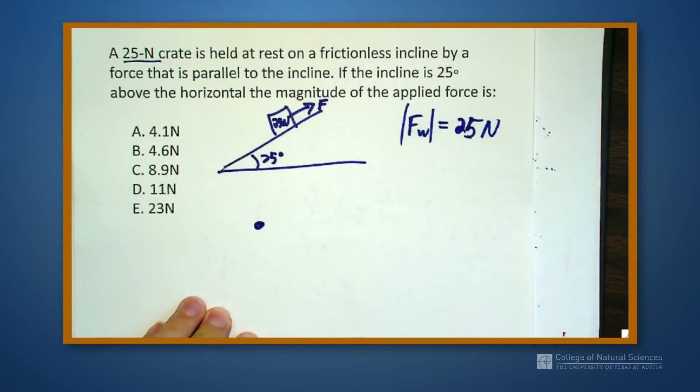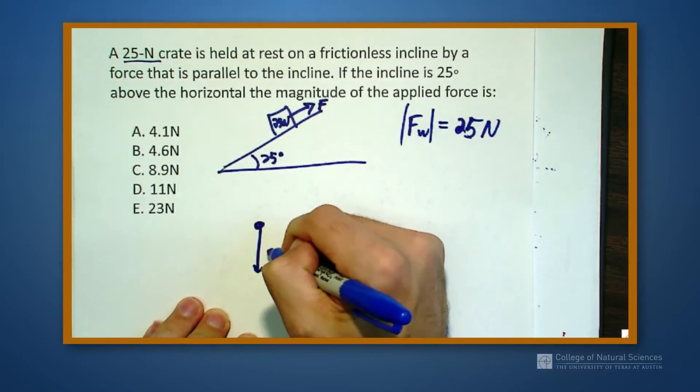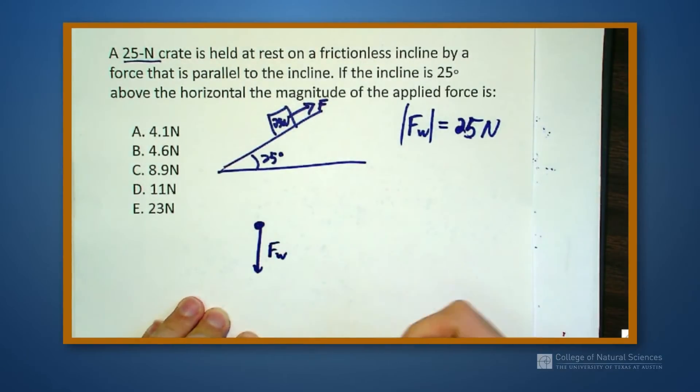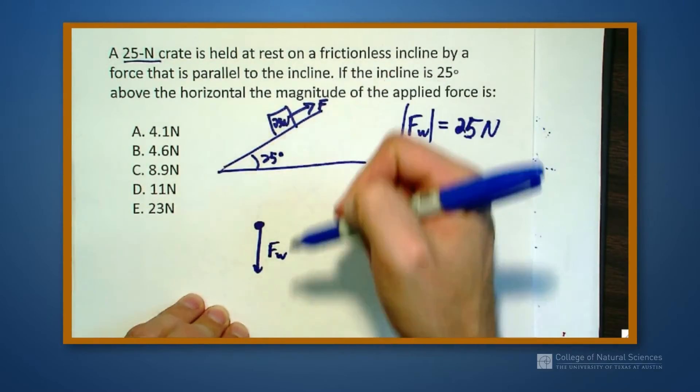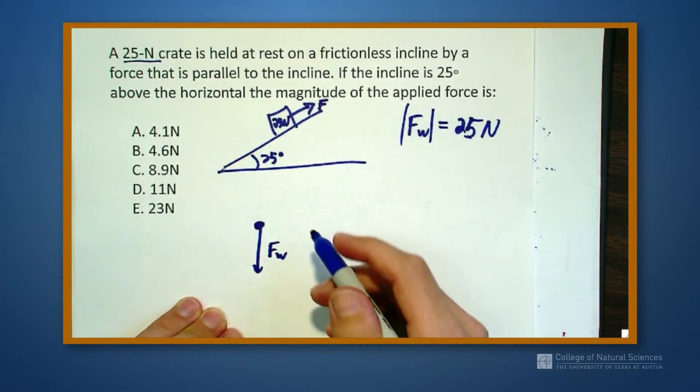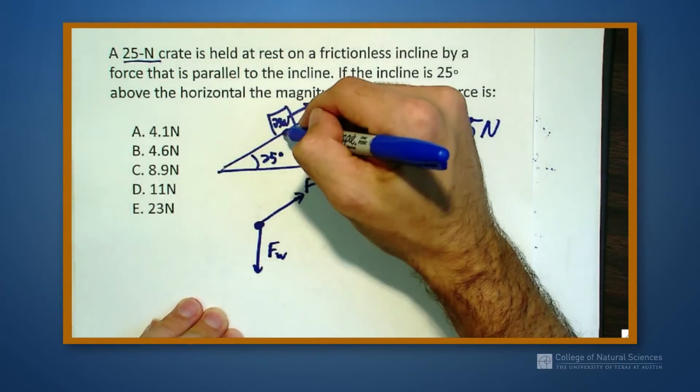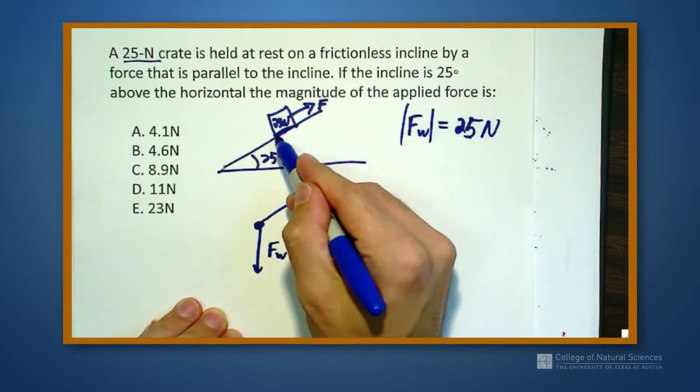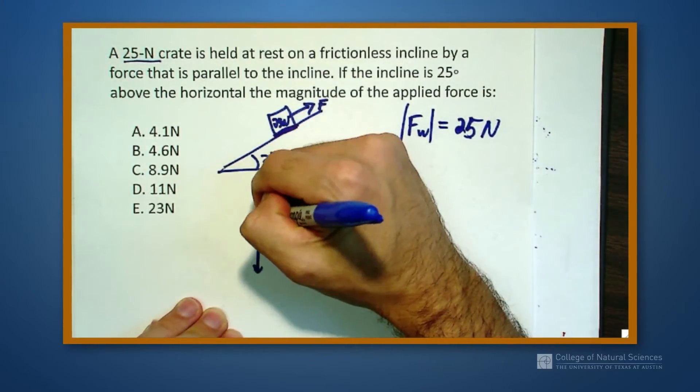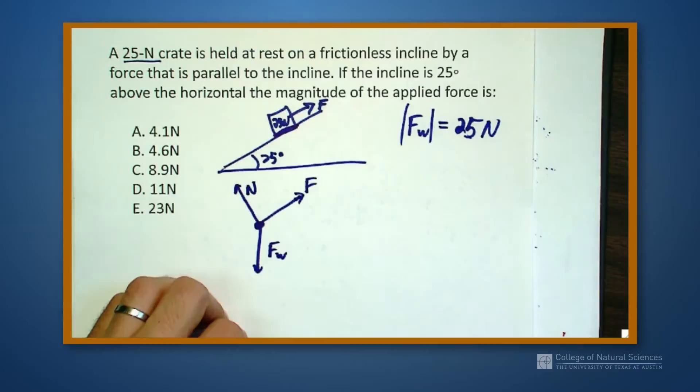So let's draw our free body diagram. Well, I have a weight force. It points straight down, gravity pulls this thing towards itself, pulls the block towards the center of the earth. Straight down. I know I have an applied force. And last but not least, I know that I have this surface right here, which means perpendicular to that surface, I'm going to get a normal force.